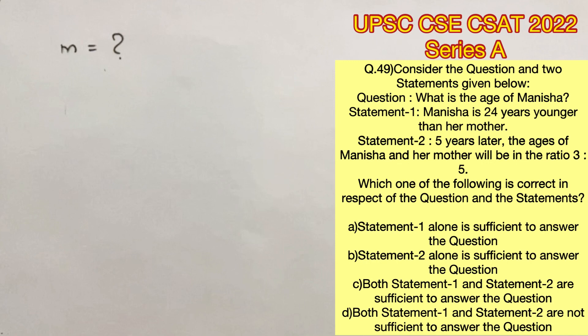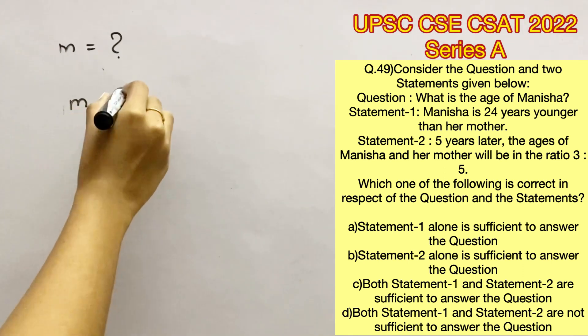We are supposed to find the age of Manisha. So let's consider small m as the present age of Manisha and capital M as the present age of her mother.